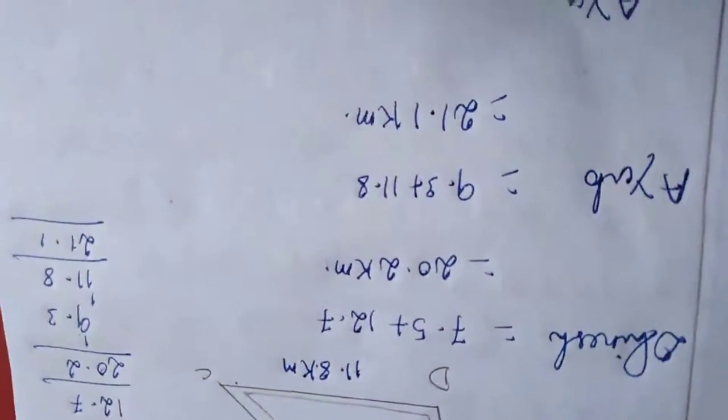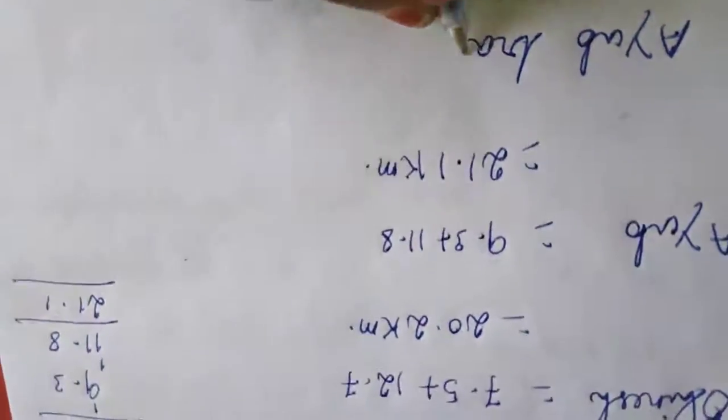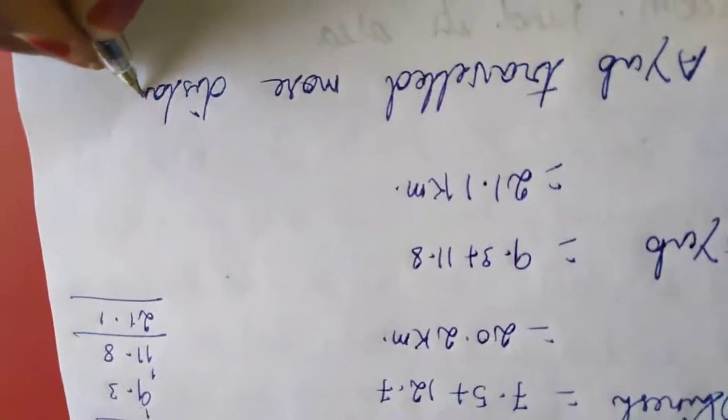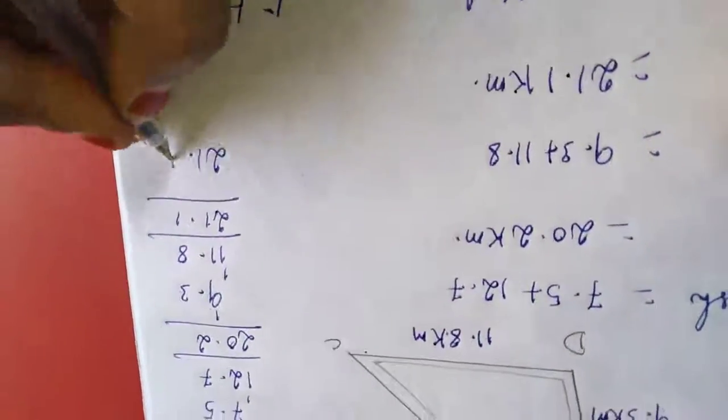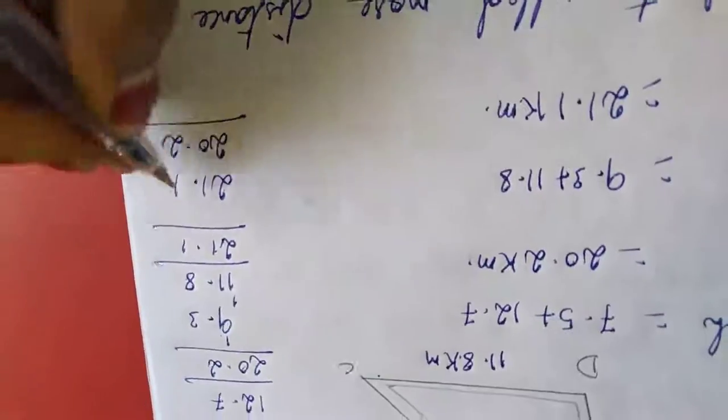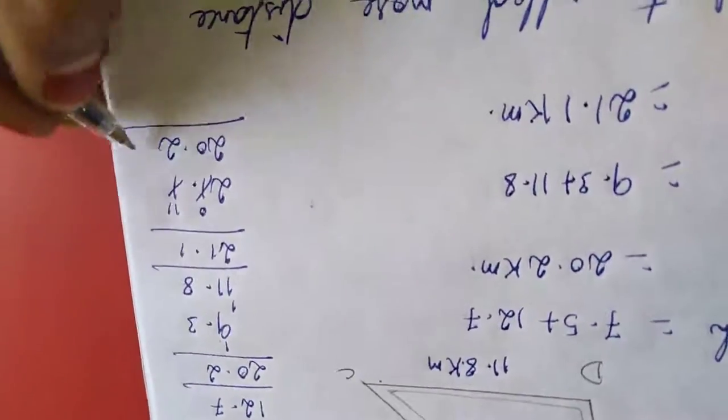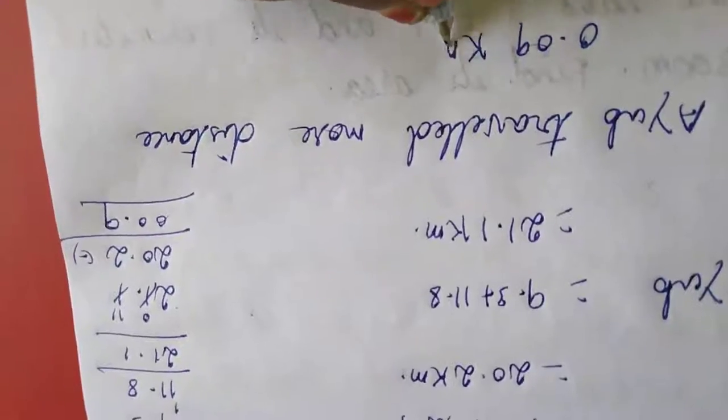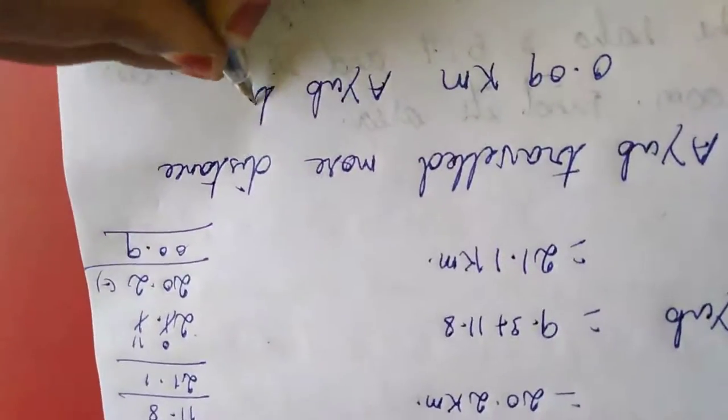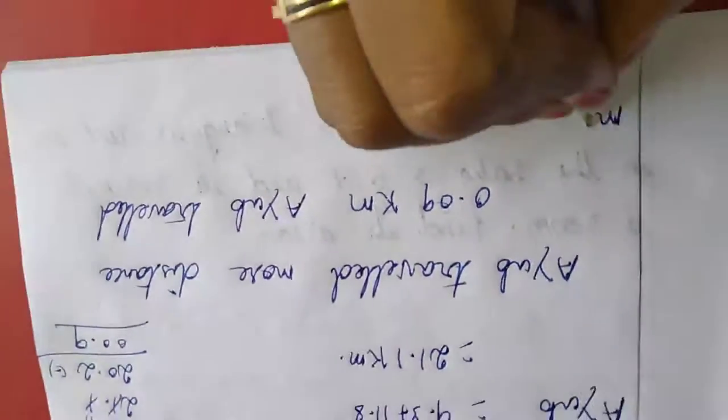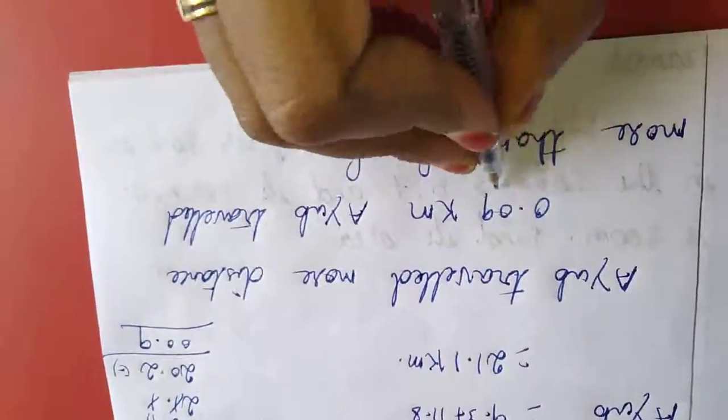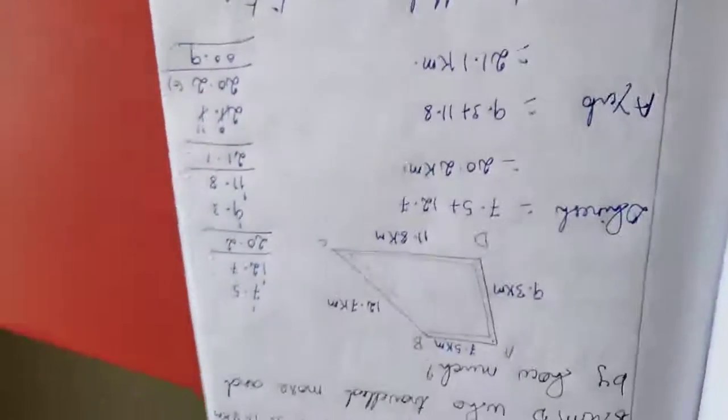Dinesh, Ayu. Ayu traveled more distance. So by how much also they are asking. So you have to subtract these two numbers. So 21.1, 20.2. I am getting borrowed, so 0, this one became 11. 11 minus 2, we will get 9, 0, 0. So 0.09 km, Ayu traveled more than Dinesh. That's why the 7th sum is completed.